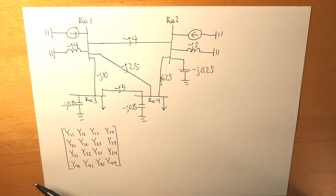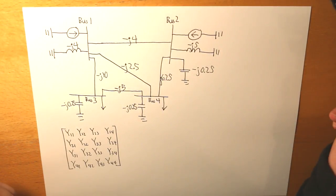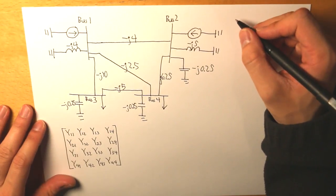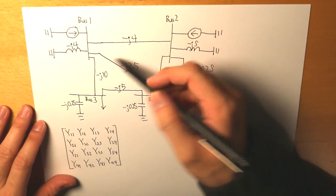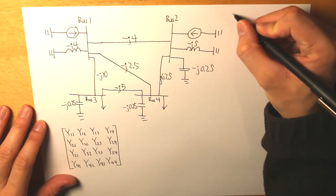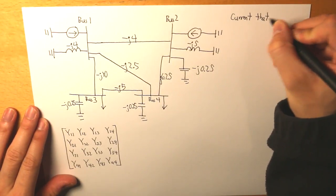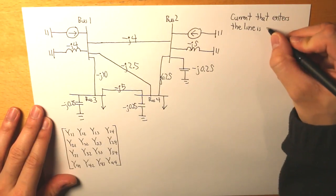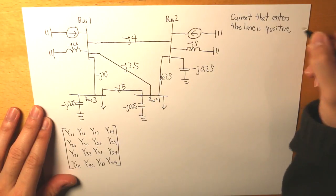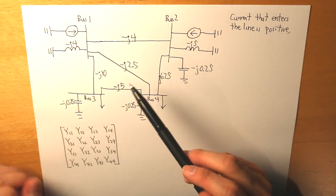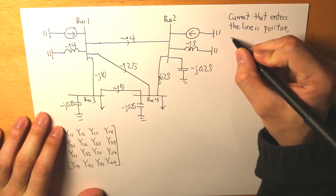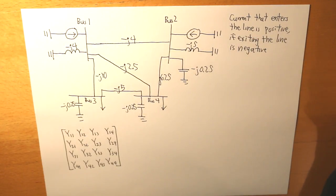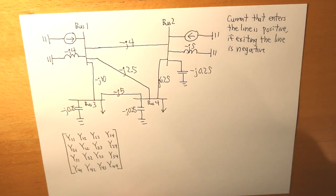Each diagonal admittance is equal to all the lines entering that bus. We assume that current entering a line is positive and current exiting the line is negative. This is important to understand because the admittance matrix is essentially applying Kirchhoff's current law — KCL.